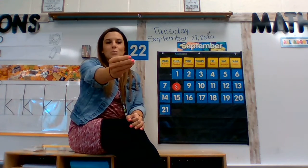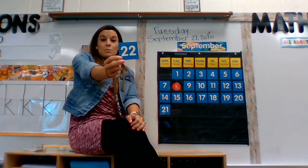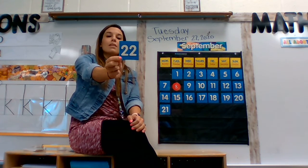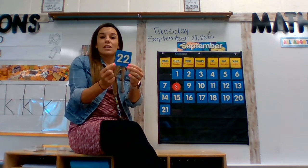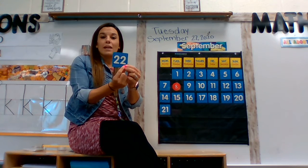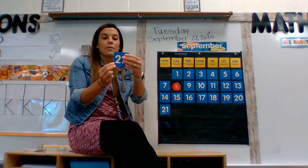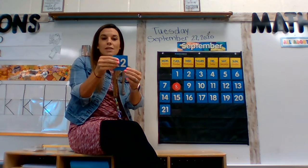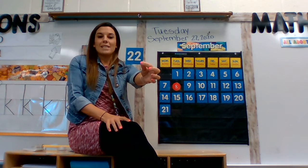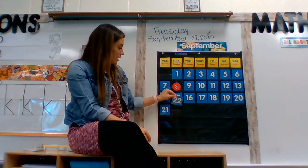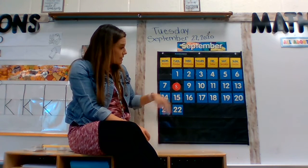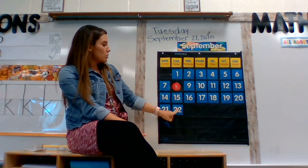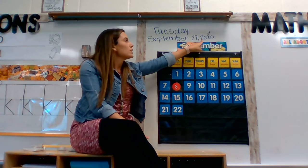So we have the number 22. And guess what? Number 22 is a two-digit number. So that means there is a tens place and a ones place. We have two tens and two ones to give us the number 22. I'm going to go ahead and put that in here. Today is Tuesday, September 22nd, 2020.